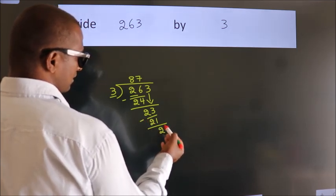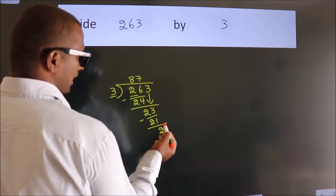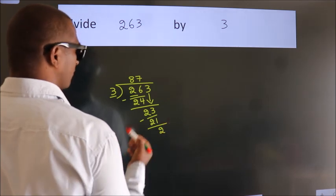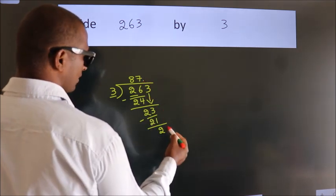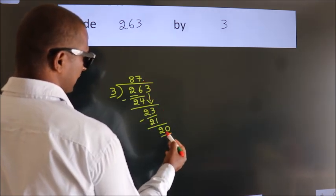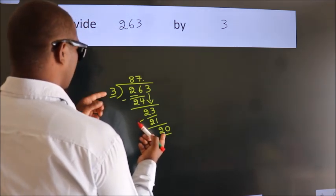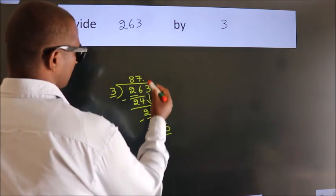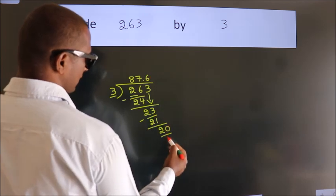After this, no more numbers to bring it down. So, what we do is, we put dot take 0. So, 20. A number close to 20 in 3 table is 3 6 18.